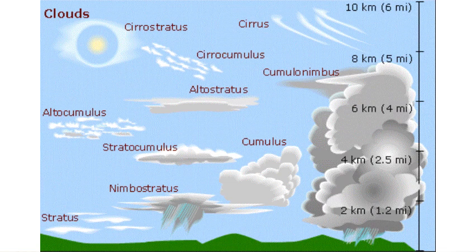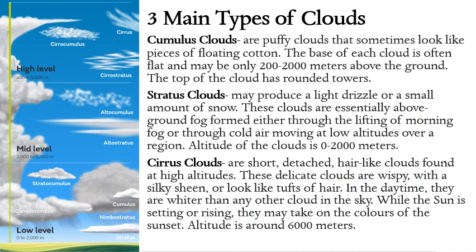We will talk about different types of clouds, from the highest to the lowest level. These include cirrostratus, cirrus, cirrocumulus, cumulonimbus, altostratus, altocumulus, stratocumulus, cumulus, nimbostratus, and the lowest cloud, which is the stratus cloud.